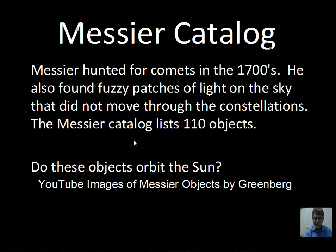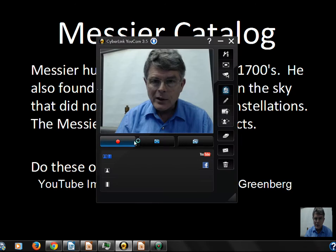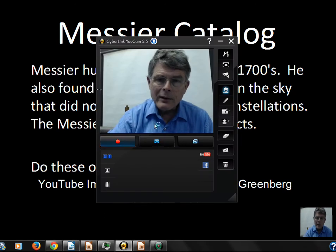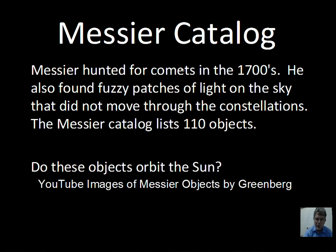Messier was a French astronomer who became interested in comets after seeing a brilliant comet early in his life. He was hunting for comets with a small telescope in the late 1700s. As he was looking for comets, he would sometimes be distracted by a fuzzy patch of light on the sky that kind of looked like a comet at great distance from the Sun. But this fuzzy patch would not move from night to night, so he made a list of these objects that didn't move.